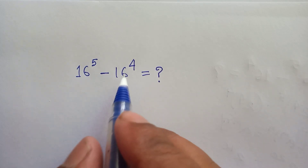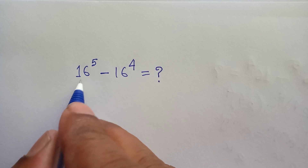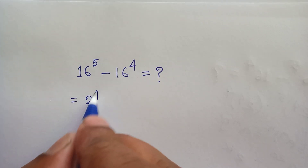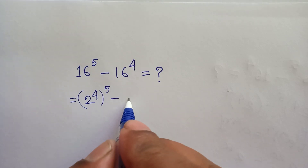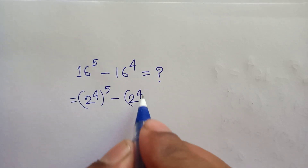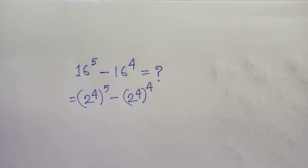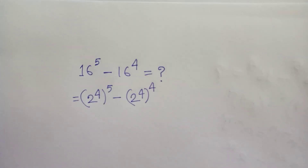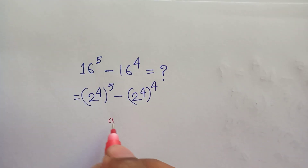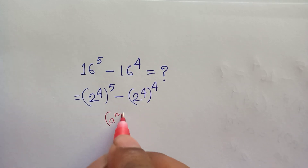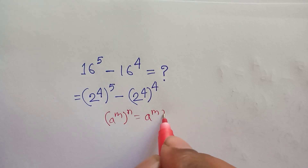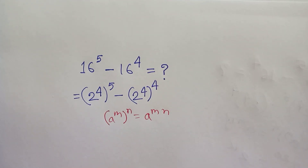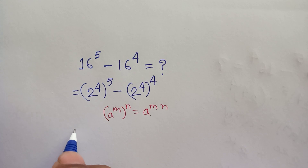So we can write 16 as 2 to the 4, giving us (2^4)^45 minus (2^4)^44. We know that a^m whole to the n is equal to a^(m×n), so according to this formula we can simplify each term.